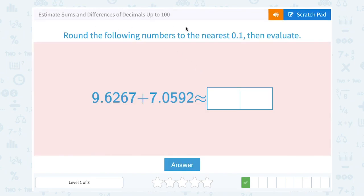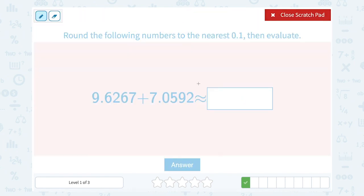Round the following numbers to the nearest one-tenth, then evaluate. Okay, so just like before, I'm going to look at those first two decimal places to see how to round my number. So 9 point, notice the number after the 6 is only 2. Since it's smaller than 5, that's telling me to leave the 6 the way it is, to 9.6.